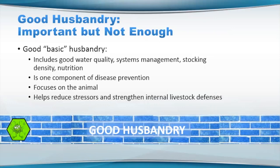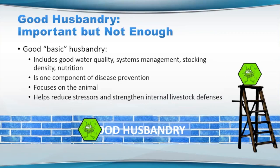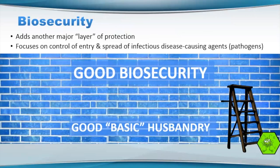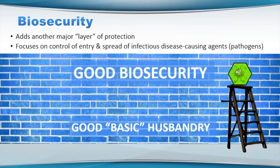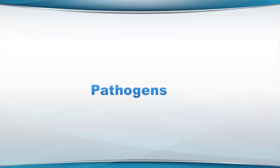Good husbandry is one component of disease prevention, really focusing on the animal, making sure everything is as good as possible. It will include things that will help reduce stressors and strengthen the internal and external defenses of your livestock. You've got this little green pathogen trying to get through, and good husbandry will help in many cases, but you are going to have situations and pathogens that are going to be able to get over that wall of good husbandry — and that's really what you're trying to prevent. Biosecurity adds another major layer of protection and will really focus more on control of entry and spread of pathogens.